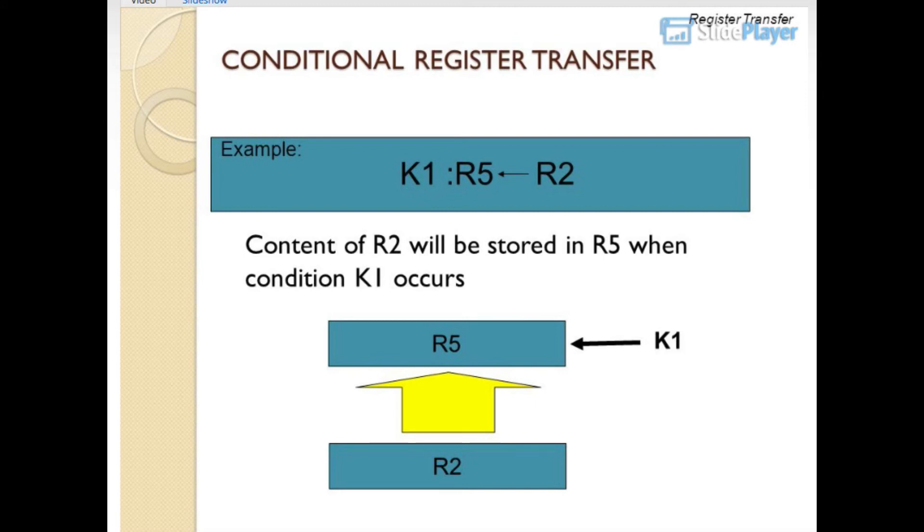Example: K1: R5 gets R2. Content of R2 will be stored in R5 when condition K1 occurs.